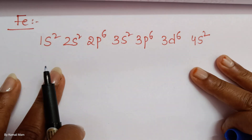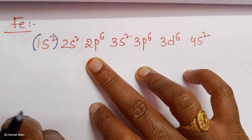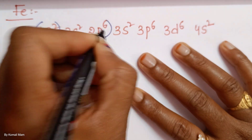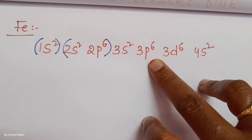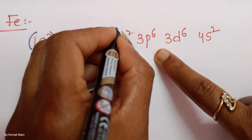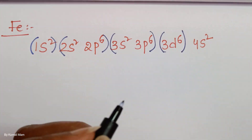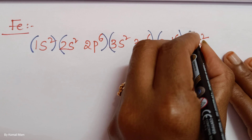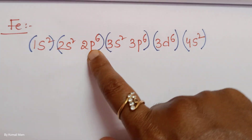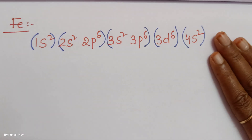Once you write the electronic configuration, you have to group the shells. In the first shell, only 1s is there — group it. In the second shell, 2s and 2p are there — group them together. Always S and P should be grouped together. If d or f is there, we group them separately. In the fourth shell, only 4s is there; if 4p is also present, then 4s and 4p go together. This grouping rule is clear.